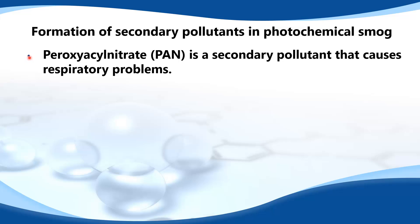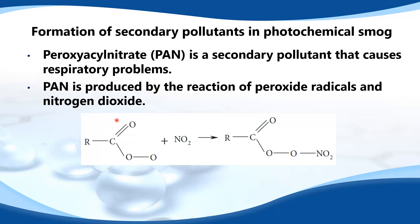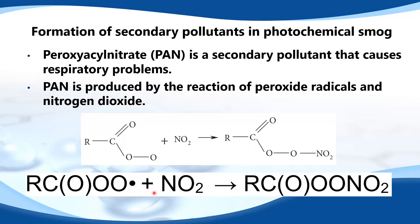Peroxyacyl nitrate, or PAN, is a secondary pollutant that causes respiratory problems. PAN is produced by the reaction of peroxide radicals and nitrogen dioxide. Here we have a peroxide radical and nitrogen dioxide reacting to form PAN. This is our peroxide radical, here we have NO₂ (nitrogen dioxide), and this is the formula for PAN.